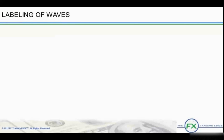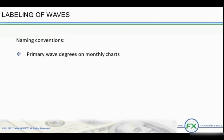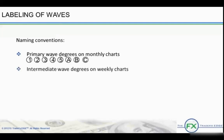Labeling of waves. Before we look at some examples from the market, we will talk about the naming convention for counting waves. Wave degrees have names and labels. Primary wave degrees, seen on the monthly charts, are noted as: 1, 2, 3, 4, 5, capital A, B, C. Intermediate wave degrees, found on the weekly charts, are noted as numerals and letters: 1, 2, 3, 4, 5, and A, B, and C in parentheses. Minor wave degrees, found on the daily charts, are noted as numerals and letters without parentheses.